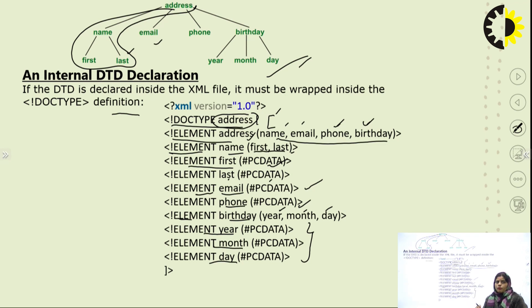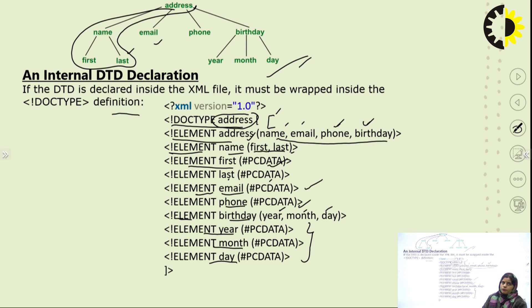To summarize, when programming the internal DTD, first write the XML version declaration, then start from the root element of the tree.